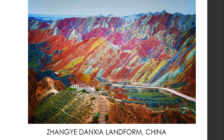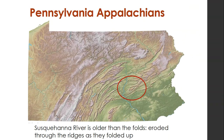Here is an example from a landform in China that is really beautiful — different types of minerals have oxidized, giving you these colors, and you can see how it's all been folded together and pushed up. We can also see this with the Appalachian Mountains in Pennsylvania. The Susquehanna River is older than the folds — it's one of the oldest rivers in the world. We know it formed before the folds because water never flows uphill, so the river cuts through the folds rather than flowing around them.